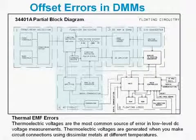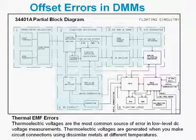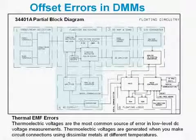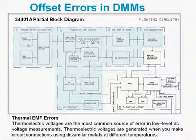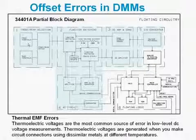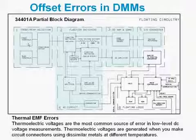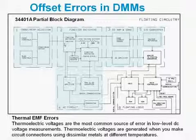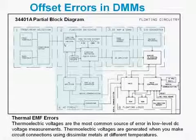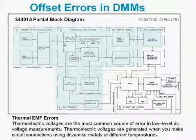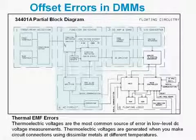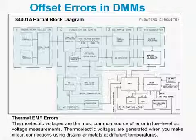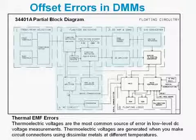In our first slide here, we've got a partial block diagram of the 34401A DMM. I want to use this to show where the offset errors are in your DMM. The first section of the block diagram, number one, is where we switch between the front and rear terminals. Section number two is where we actually change the direction of the signal path, depending upon whether you're measuring DC volts, AC volts, resistance, or current. If you happen to choose AC volts, you'll get switched into section number four, where we have our amplifier and RMS converter.